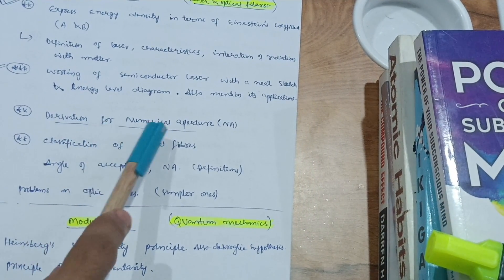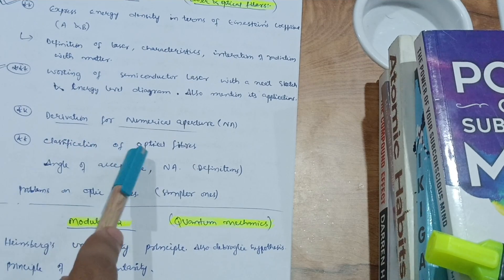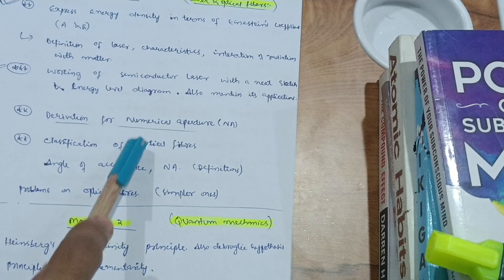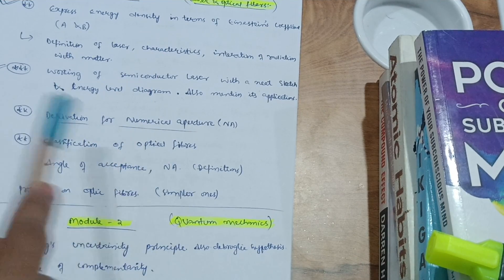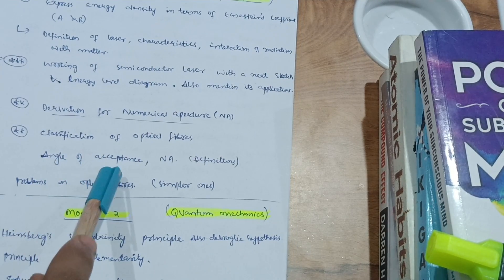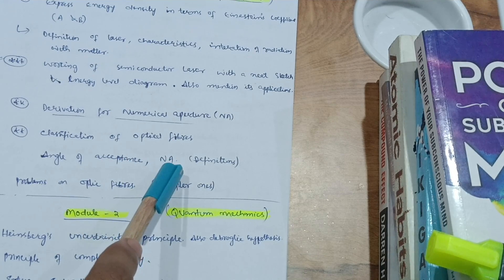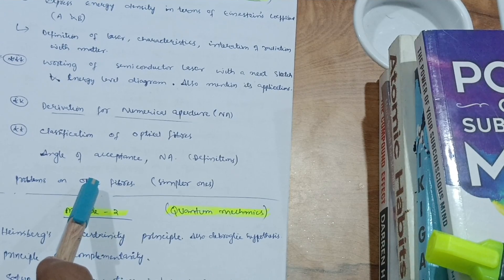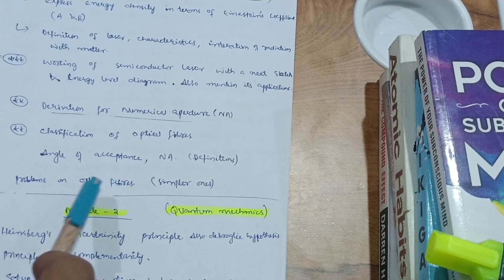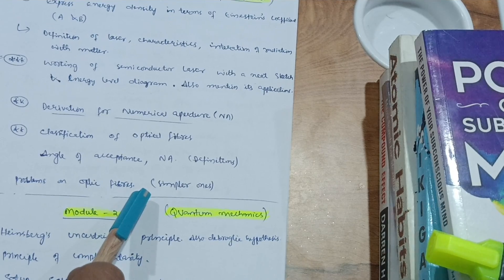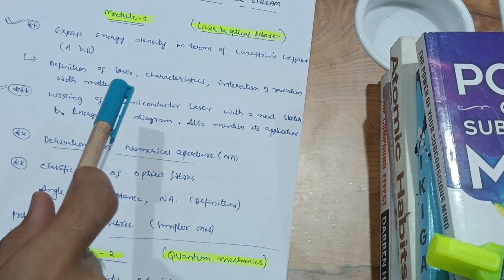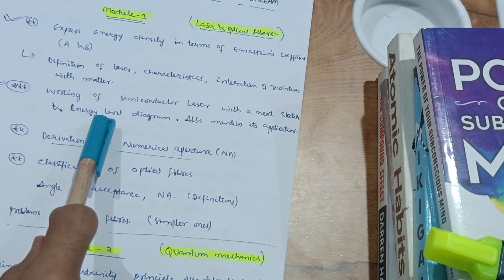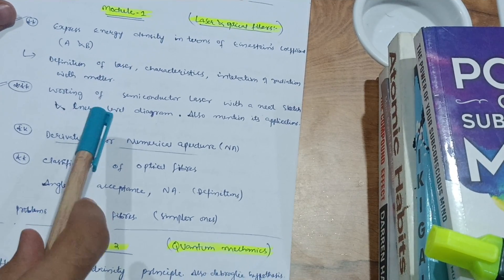Next is the derivation for numerical aperture and classification of optical fibers. Module one has two chapters: laser and optical fibers, and optical fibers. You have to focus on the angle of acceptance, definitions, and numerical aperture. There are also simpler numerical problems based on optical fibers, so go through those as well. Remember, numericals will definitely be asked from each module in applied physics.